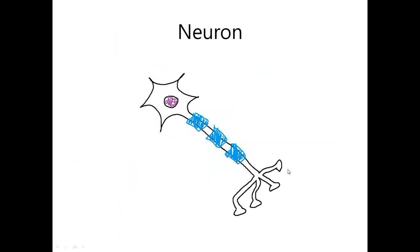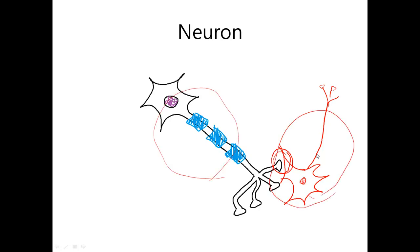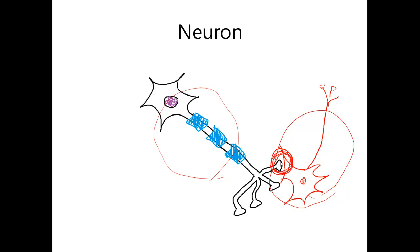Now, at the axon terminal, there is another cell with another dendrite, and it makes a connection with this dendrite to convey information from one neuron to another. The connection that is made between the axon terminal of one neuron and the dendrite or cell body of the other neuron is called a synapse. And the process of transmitting information across this synapse is called synaptic transmission.